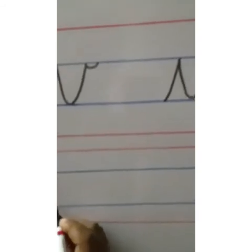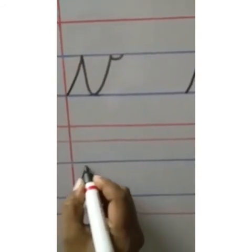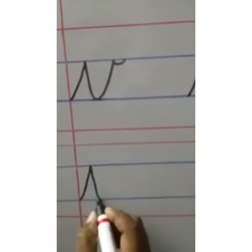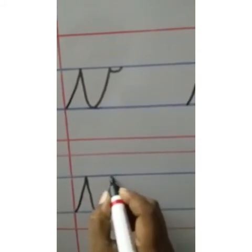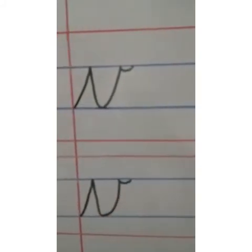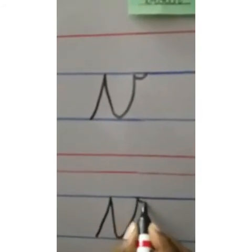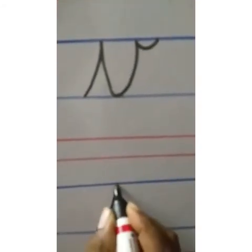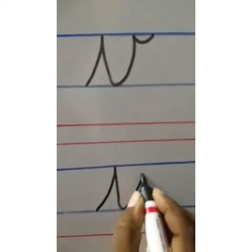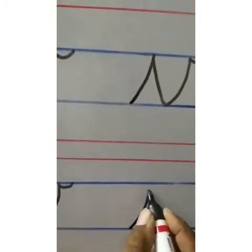Now, from our blue line, we go up, slanting, come down, make a small curve here, and a small curve up. This is V. V. V. V.